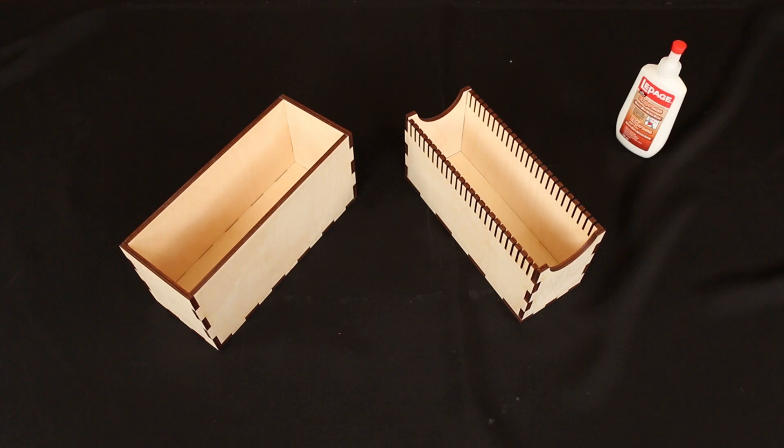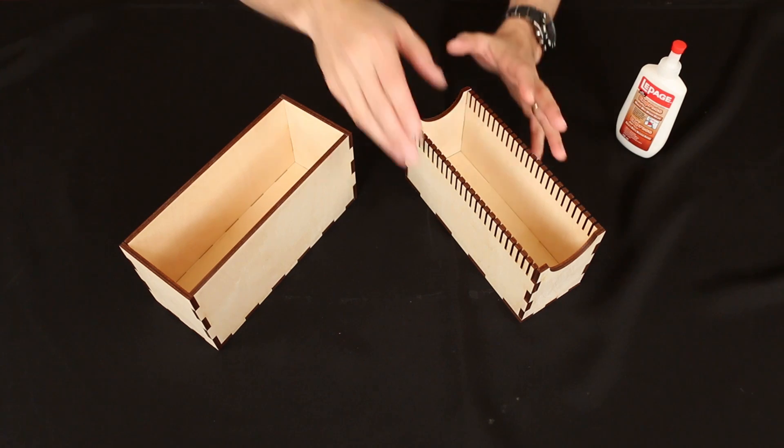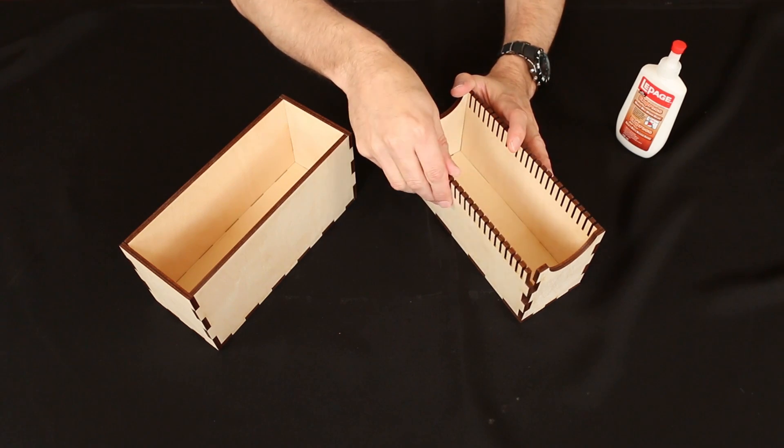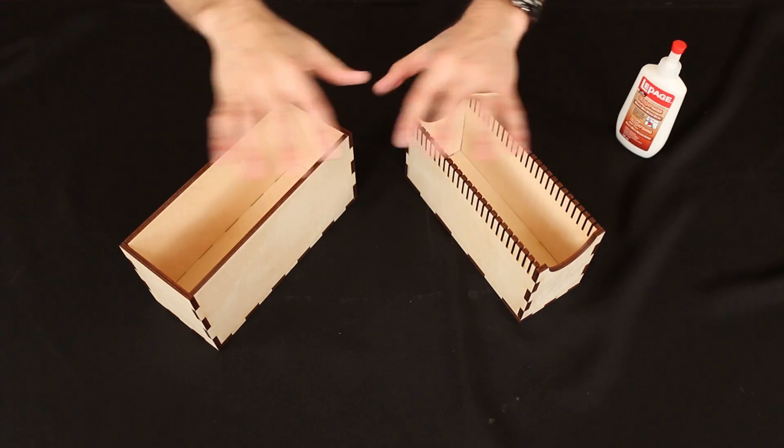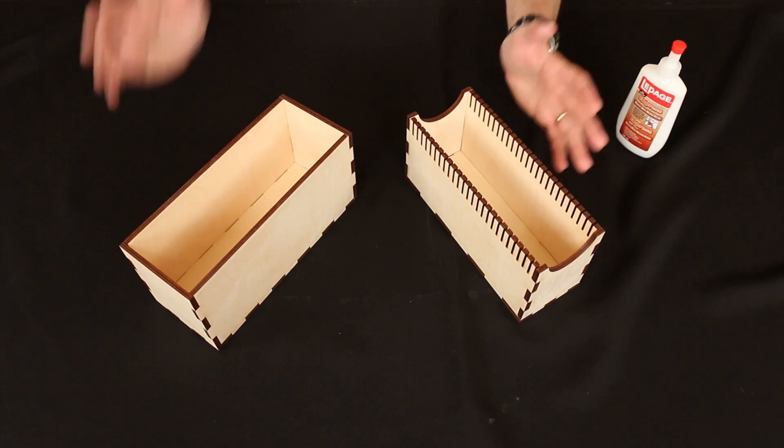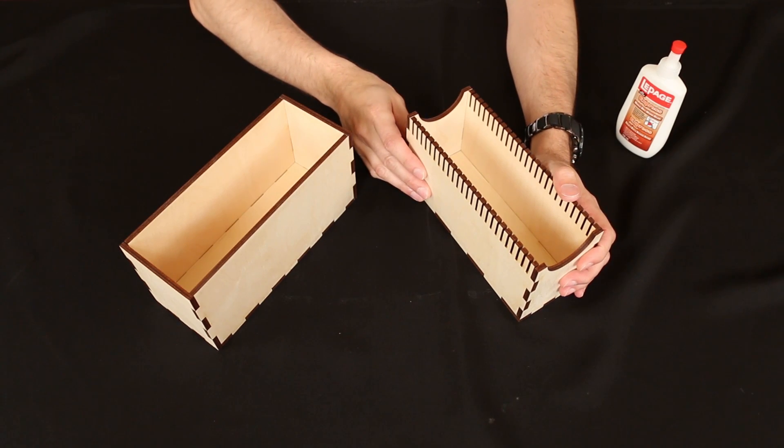Now, I know it looks like I've gone ahead and assembled the entire box without showing you any of the necessary steps, but that's not the case. What I've done here instead is a dry fitting. So I've just put everything together without using any glue, and this is something you want to do to make sure that you understand how it all goes together, and then to make sure that everything fits together the way that it should.